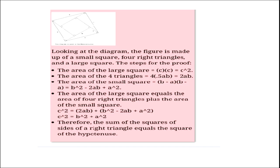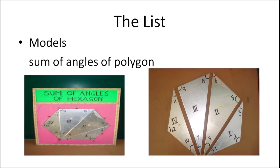Therefore C² = B² + A². The sum of the squares of the sides of a right triangle equals the square of the hypotenuse. Then we can have a model of a hexagon and find the sum of angles of polygons.